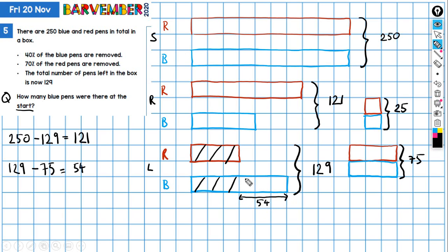And that's three of these parts of blue. So 54 then divided by 3, which gives me 18. That gives me the value of each of these blocks of blue. And we're actually asked how many blue pens were there at the start. And if each of these represents 18 blue pens, then 10 of them, which is what we had at the start, must be 180. So that's our final answer, 180 blue pens.